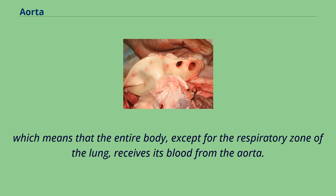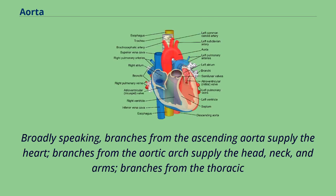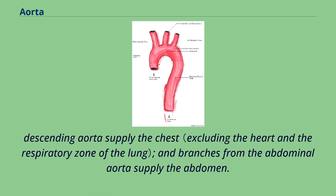Broadly speaking, branches from the ascending aorta supply the heart; branches from the aortic arch supply the head, neck, and arms; branches from the thoracic descending aorta supply the chest; and branches from the abdominal aorta supply the abdomen. The pelvis and legs get their blood from the common iliac arteries.